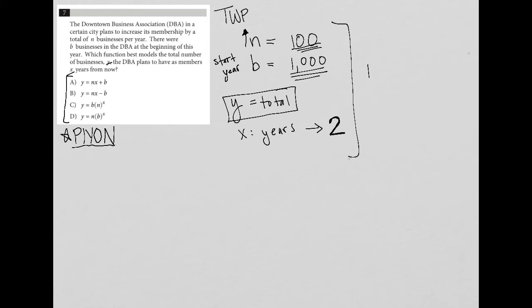Well, you would expect that, well, I already had 1000 businesses. And I'm going to add to that 100 per year, which means I'm going to multiply that 100 by two, giving me 1000 plus 200. So I would expect two years from now to have 1200 businesses, which means y should equal 1200, when n equals 100, b equals 1000, and x equals two. This is the expectation.